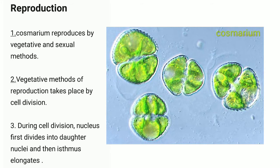Reproduction in Cosmarium. Cosmarium reproduces by vegetative and sexual methods. Vegetative reproduction takes place by cell division. During cell division, the nucleus first divides into two daughter nuclei and then the isthmus elongates.